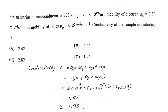Substituting values: σ = 2×10¹⁹ × 1.602×10⁻¹⁹ × (0.39 + 0.19) = 2×10¹⁹ × 1.602×10⁻¹⁹ × 0.58. Solving gives approximately 1.85, which is nearest to 1.92. Therefore the answer is 1.92 mho/m.